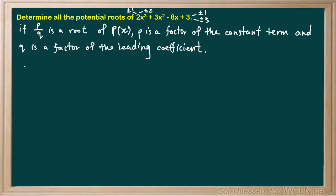So our possible p values are ±1 and ±3, and our possible q values are ±1 and ±2.